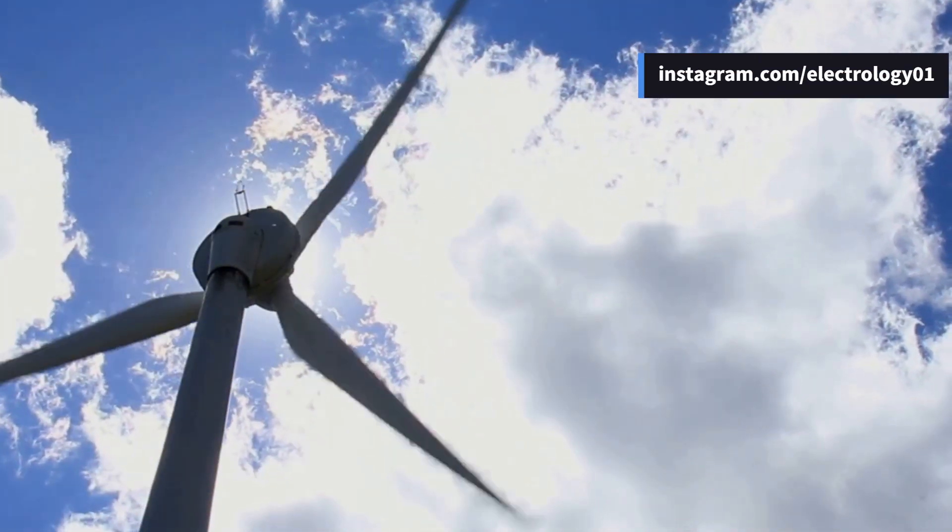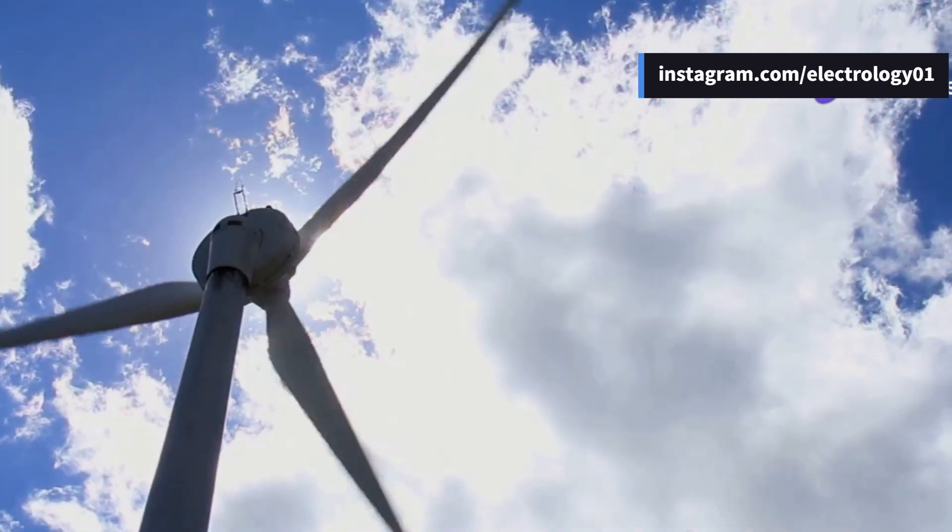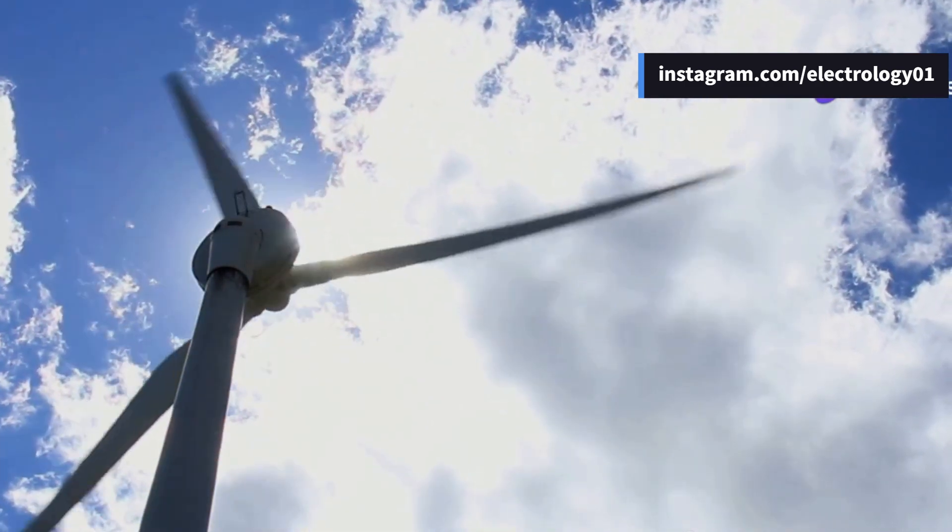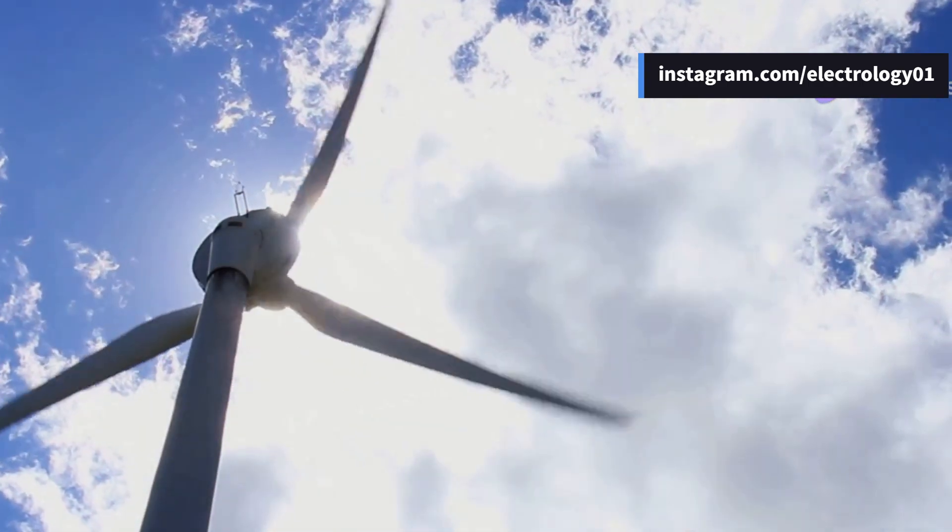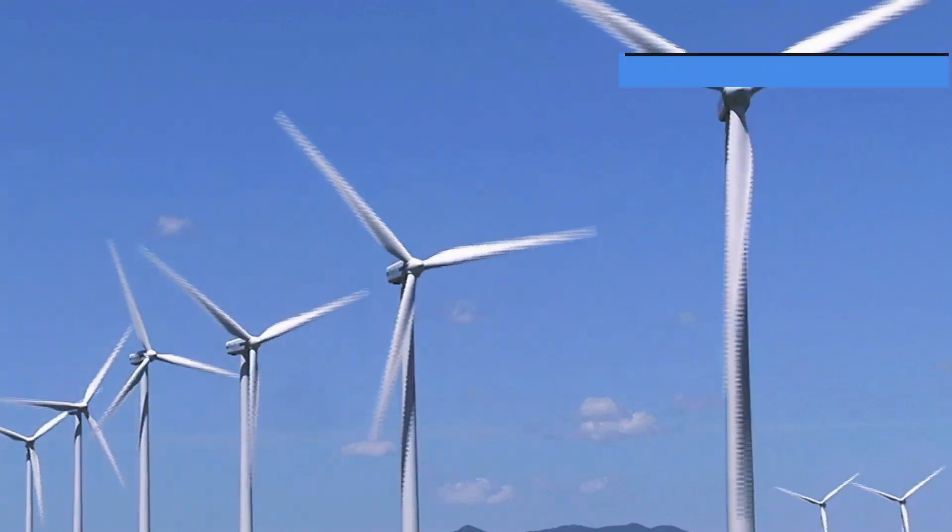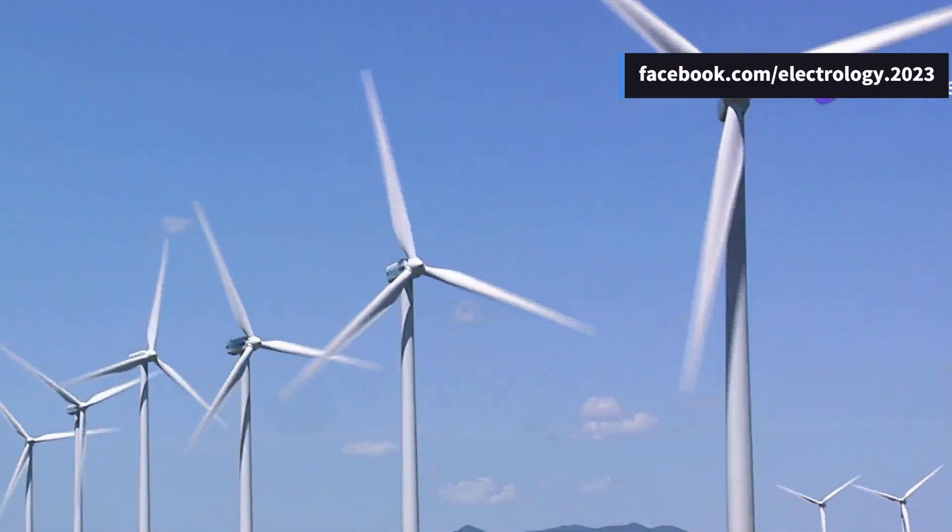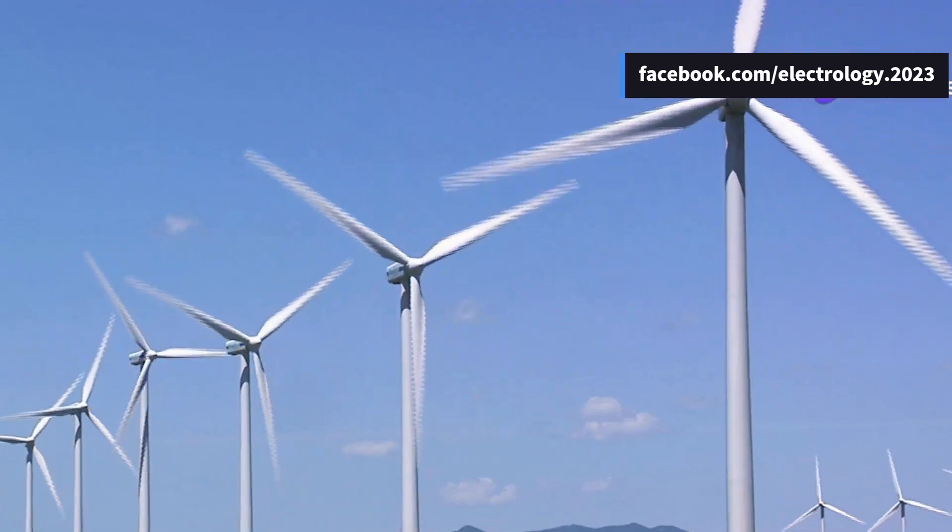Now you might be wondering why it's so crucial to protect a generator's rotor. Envision the rotor as the powerhouse inside a generator. It spins and creates the magnetic field that generates electricity. A rotor earth fault could disrupt this smooth operation leading to problems like uneven magnetic forces, vibrations and may burn the rotor winding.